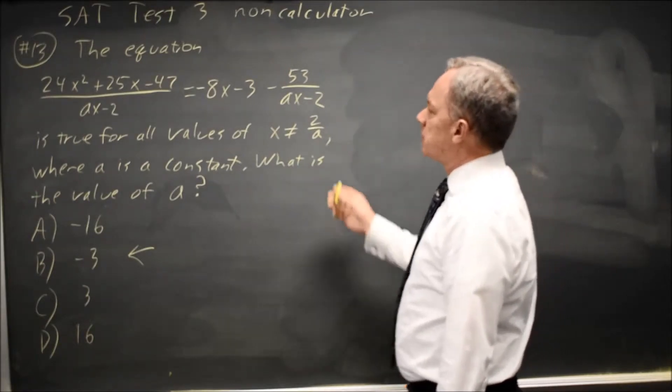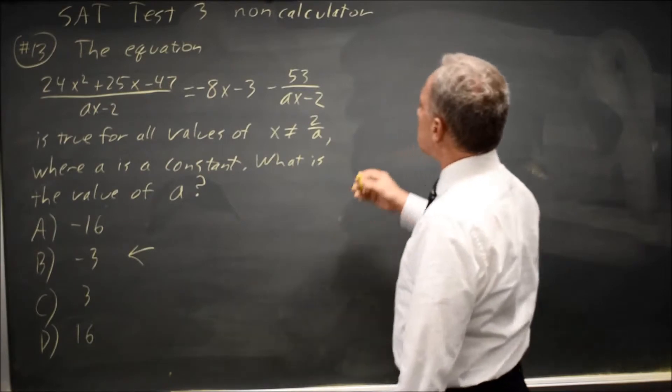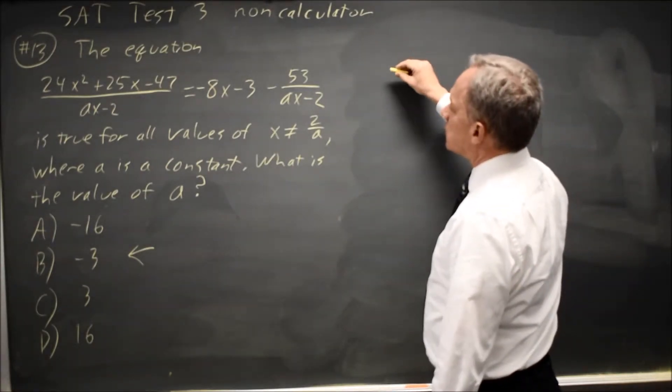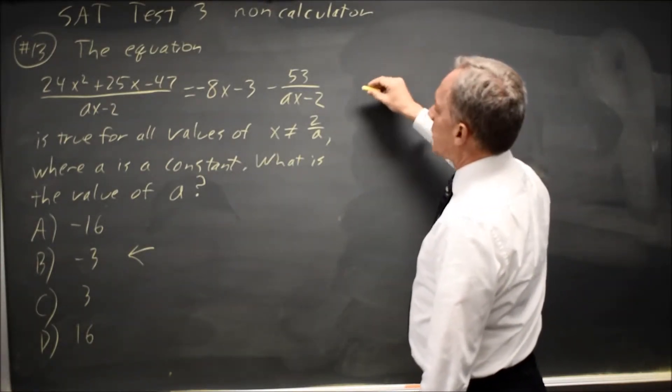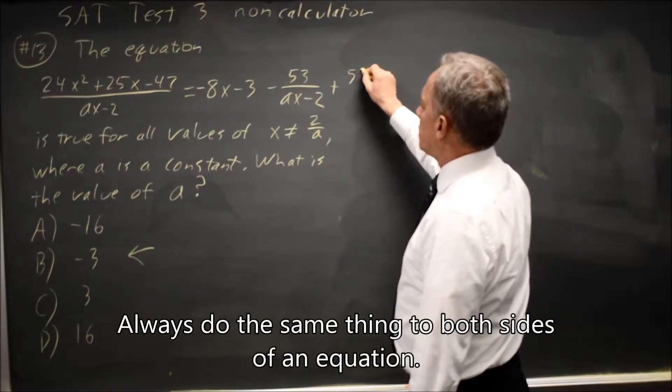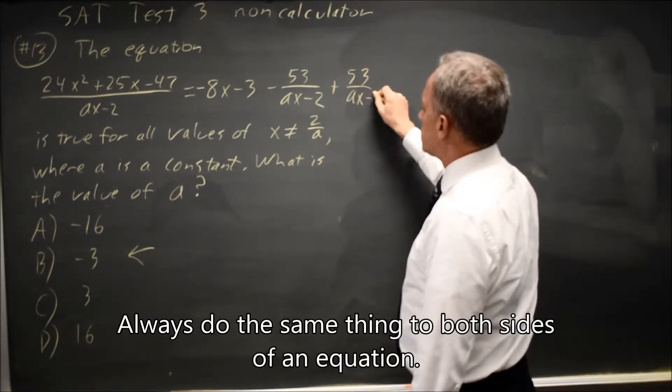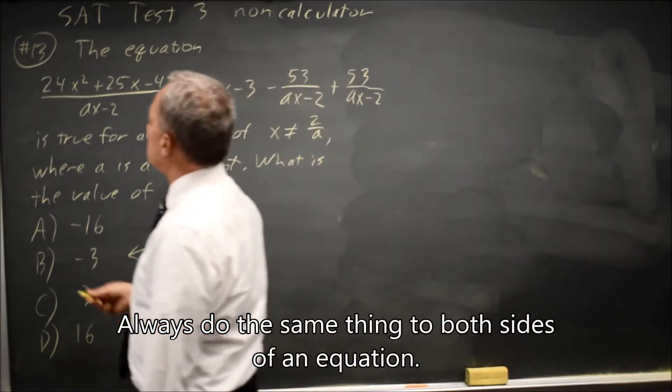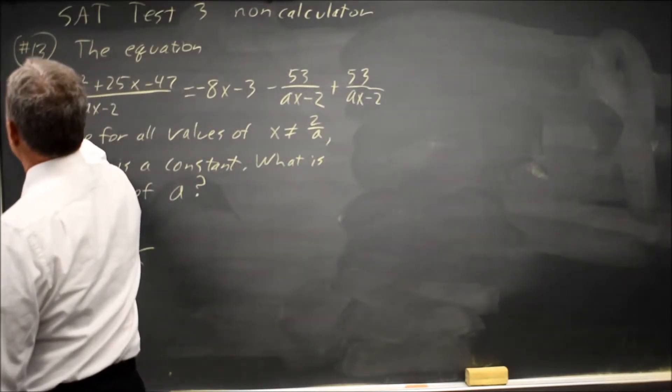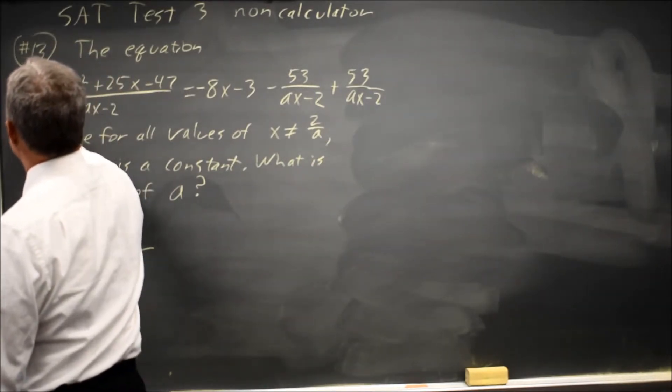Let's combine the A minus 2 terms, so if I add 53 over A minus 2 on the right, and I also add 53 over A minus 2 on the left,